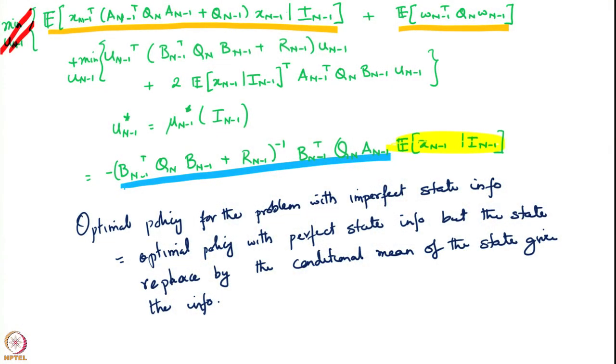This is a tremendous result, because it tells us a way of reasoning about problems with imperfect state information. It is saying that the way to reason about these problems is to pretend the problem has perfect state information, find the optimal policy, and then use a separate technique to compute your best estimate of the state — specifically the conditional mean of the state given the information — and apply that optimal policy to the estimate.